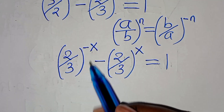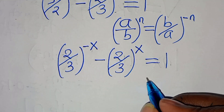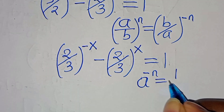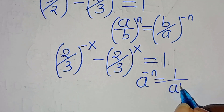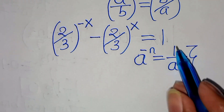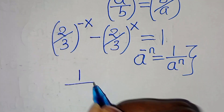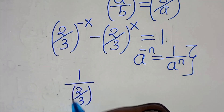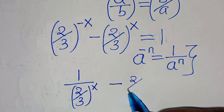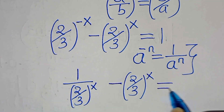The next step: (2/3)^(−x) is in the form a^(−n), which we can express as 1 over a^n. Applying this property, we now have 1 over (2/3)^x, subtract (2/3)^x, equals 1.